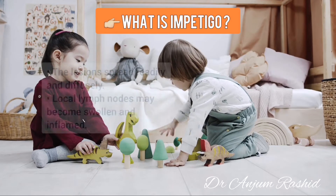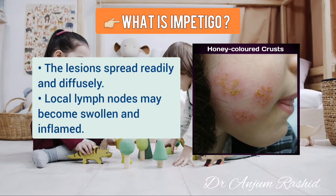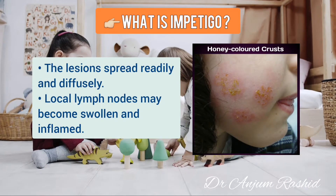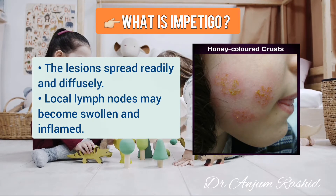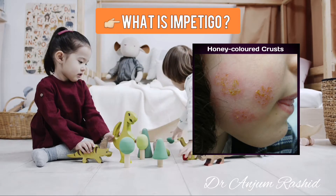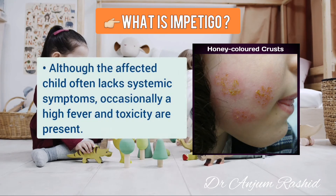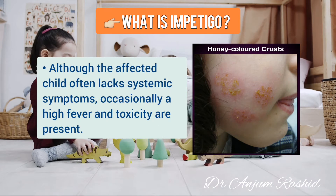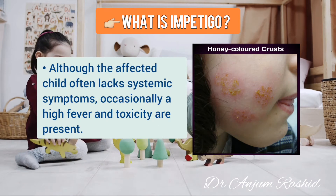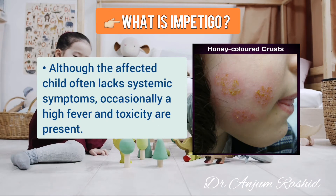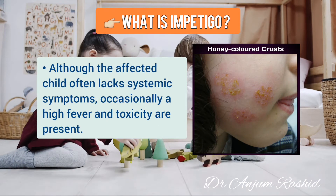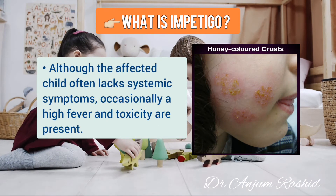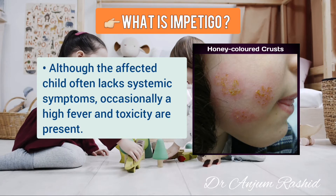The lesions spread readily and diffusely. Local lymph nodes may become swollen and inflamed. Although the affected child often lacks systemic symptoms, but occasionally a high fever and toxicity are present.